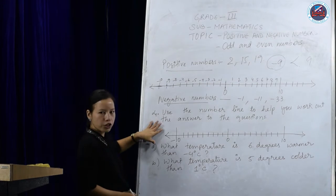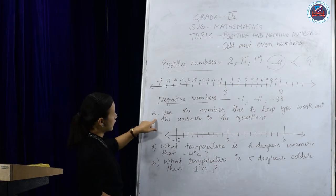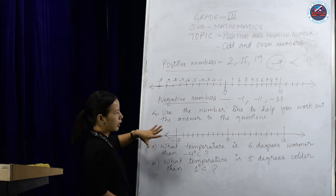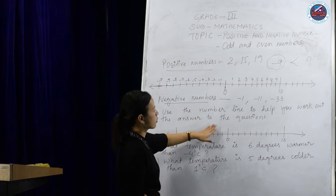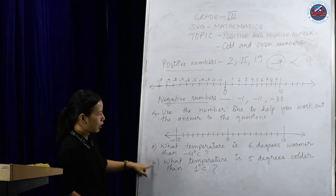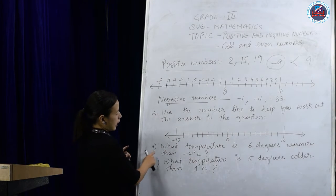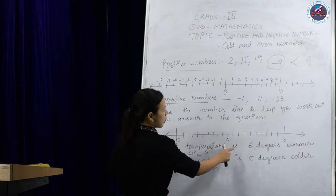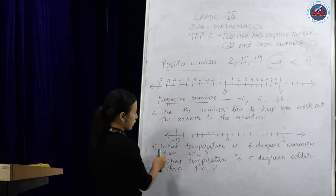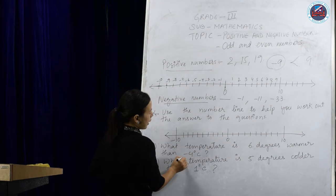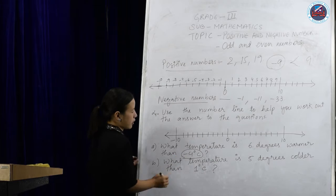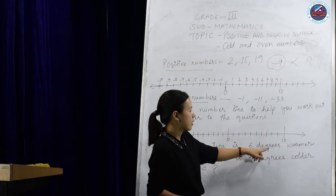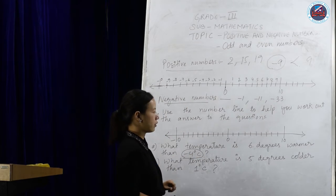This question is taken from your textbook. It says: use the number line to help you work out the answers. The first question says: what temperature is 6 degrees warmer than minus 4 degrees Celsius?